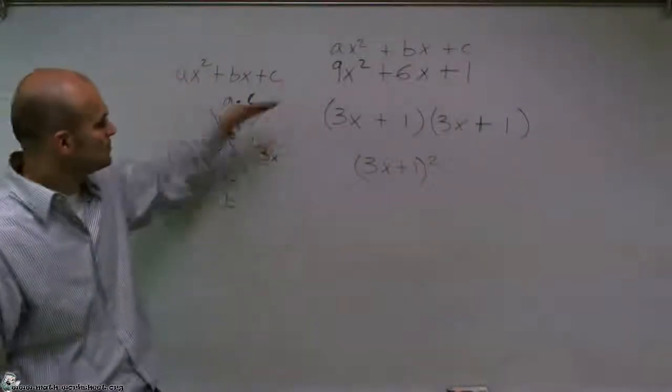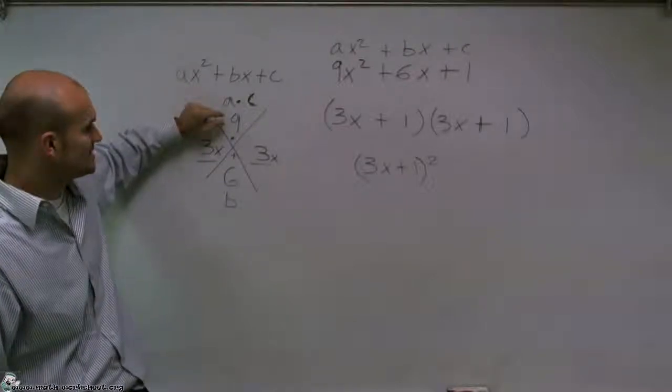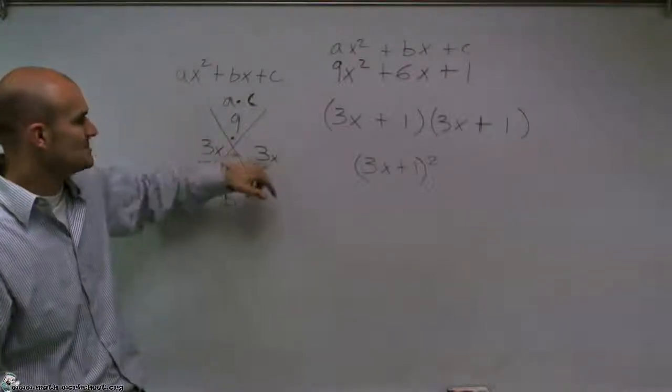So the main important thing is just to use your diamond technique. Make sure if it's for my a times c, where my a is my larger number than c, I can multiply 3x times 3x.